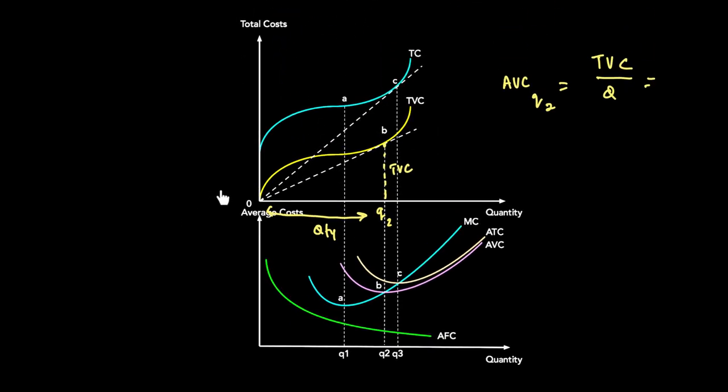If I look at the value of average variable cost at Q2, what I need to do is find out the TVC — which is this distance — divided by your quantity, which is Q2, and therefore I can get my AVC at that point. So AVC at quantity Q2 is simply a line drawn from the origin to the point on the TVC curve.